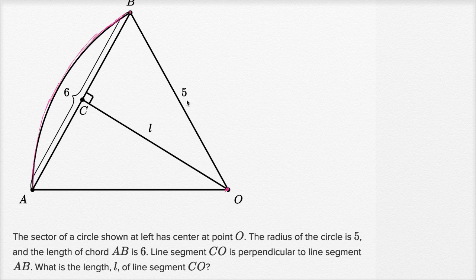So OB is five, and the length of chord AB is six, and they've labeled that from A to B. Line segment CO, this is CO, is perpendicular to line segment AB, and they've labeled that for us as well.